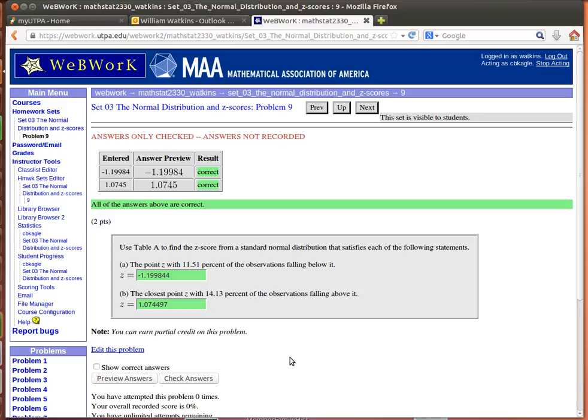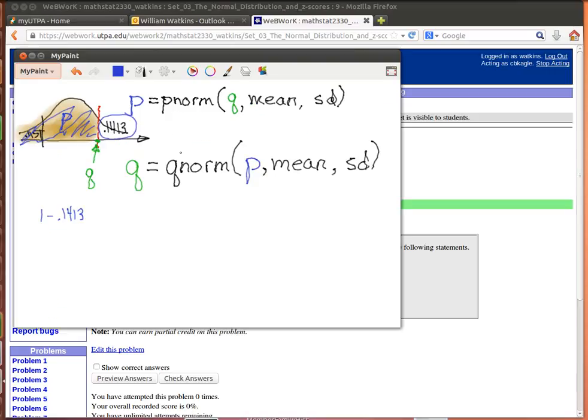You see, R has all the tables built right in with those two very powerful functions, the PNORM function and the QNORM function. In this case, we were looking for the Z value. We were actually looking for a number on that axis. We were looking for a quantile in a standard normal distribution. So I used the QNORM. If the problem was looking for where we were looking for a probability, then we'd use the PNORM.